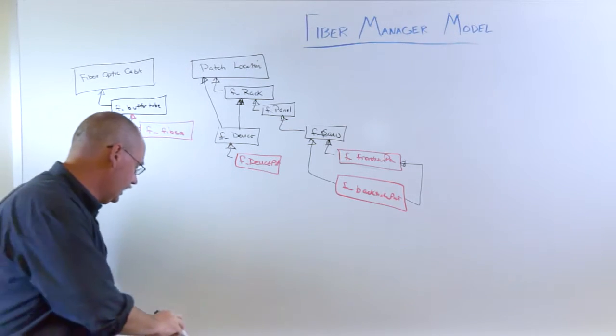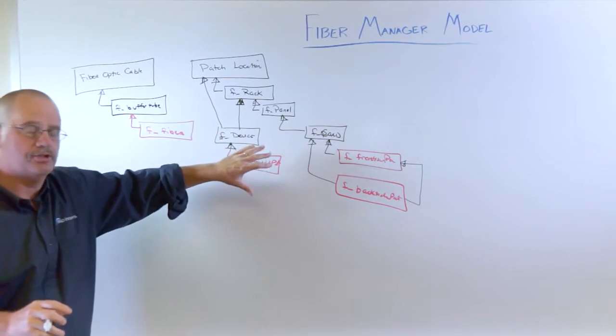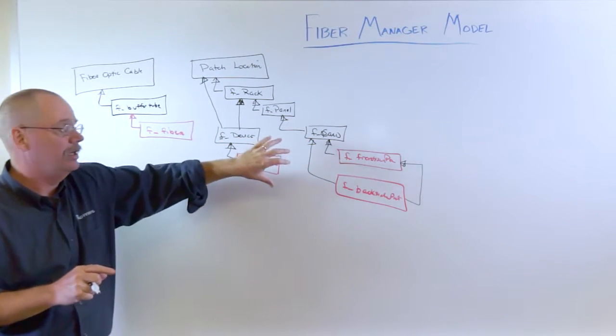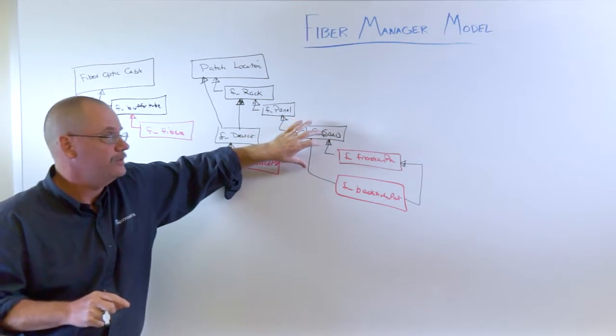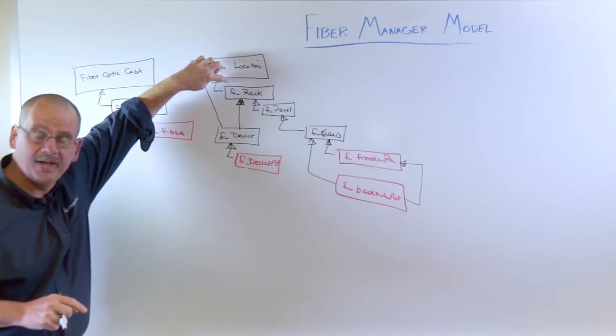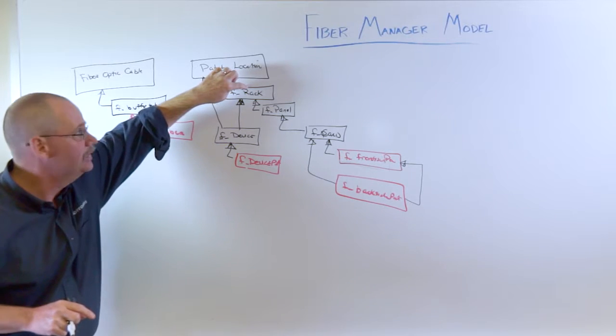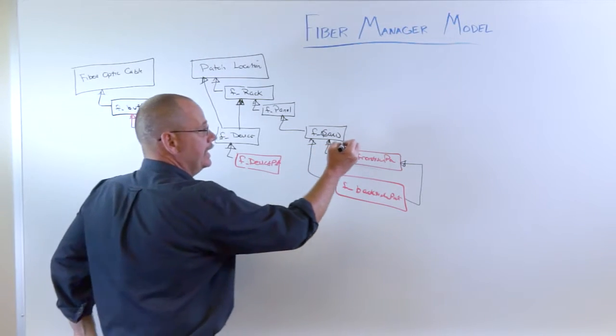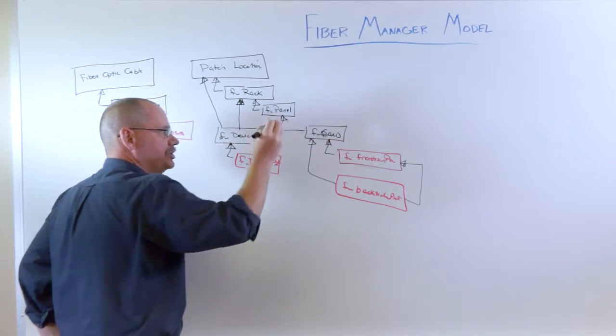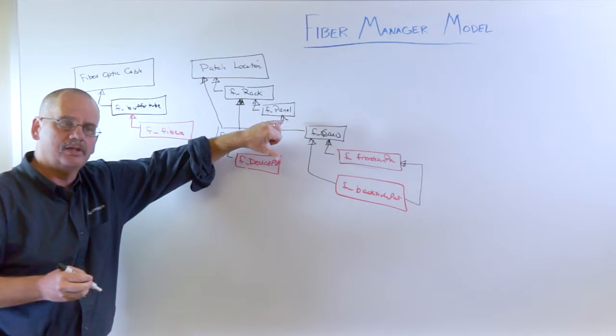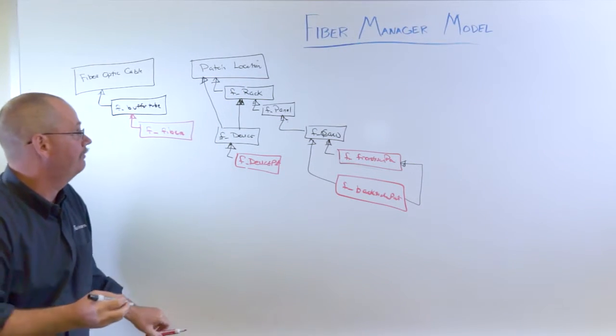Now we have, so this basically represents the out of the box structure. In another presentation we talked about the flexible data model. We can do variances of this type of scenario. We've added a building object. In between here we've had multiple buildings inside the patch location. We've also added a slot object for the panel. So there's variances that you can do using the flexible data model, which is a nice feature of Fiber Manager.